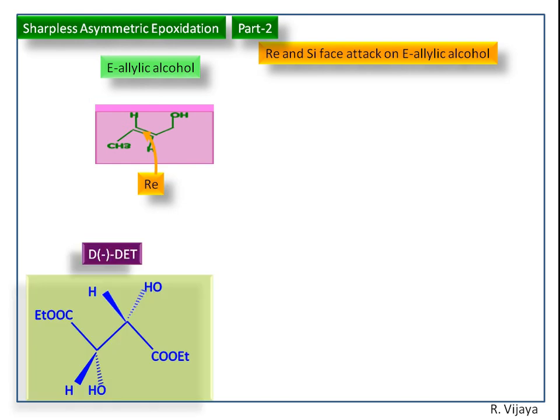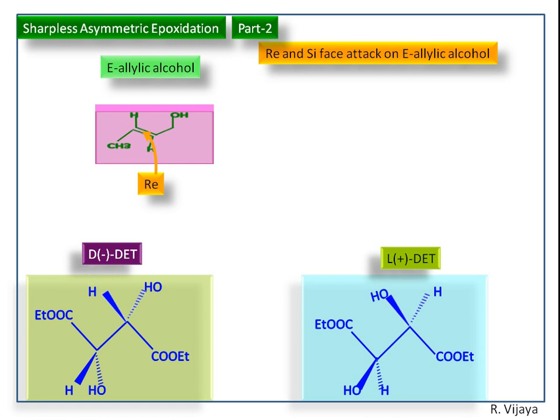This is minus diethyl tartrate. Here the hydroxy groups are backward to us. This is plus diethyl tartrate. Here the hydroxy groups are toward us in front. The configuration of minus diethyl tartrate is SS. The configuration of plus diethyl tartrate is RR.